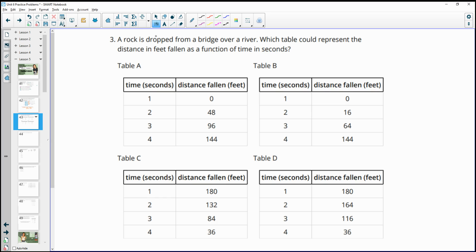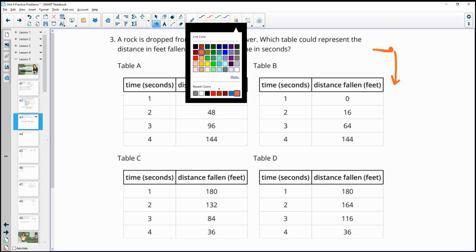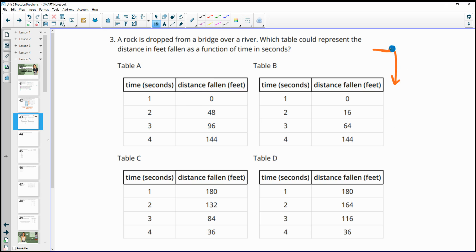Number 3, a rock is dropped from a bridge over a river. Which table could represent the distance fallen in feet as a function of time? We've got some bridge here, and then we're going to drop the rock. This distance that the rock travels is what we are looking for in this table. So how far has this rock fallen? It's going to start at 0. So the distance that it's fallen before it starts is 0.